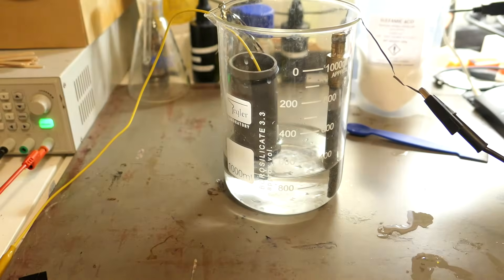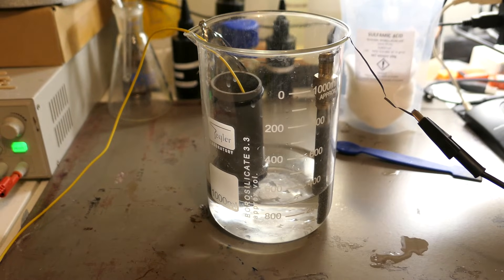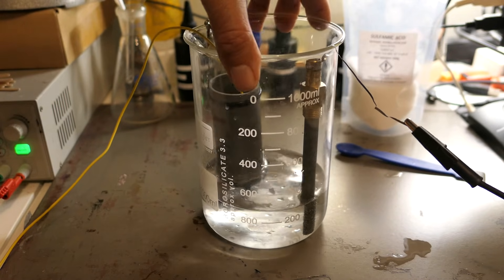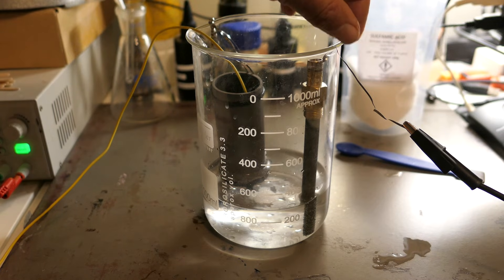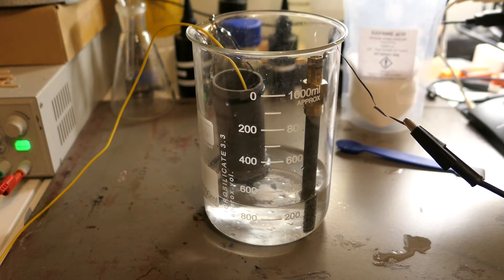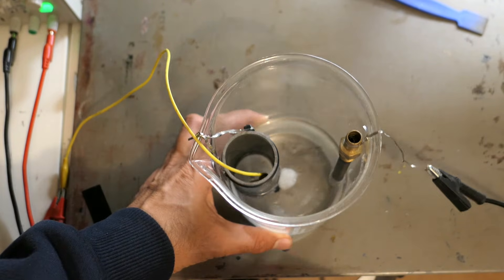As the electrolysis progresses, you'll notice a couple of things happening. First, the silver object at the anode will begin to refine and slowly dissolve into the electrolyte. At the same time, the solution itself will start to take on a slight blue tint. This is likely due to small amounts of copper ions being released from the anode as copper impurities dissolve into the solution.